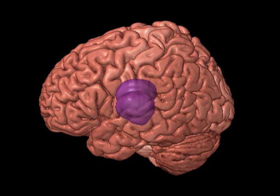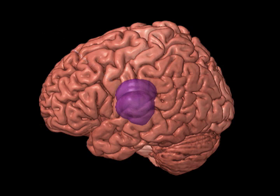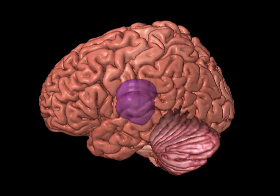When movements are made in response to the physical world, the brain first receives information about the world through the five senses. A sensory brain region begins to process this information. Then, the information is passed to the parts of the brain that control movement and balance.